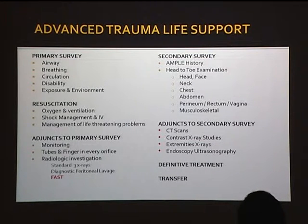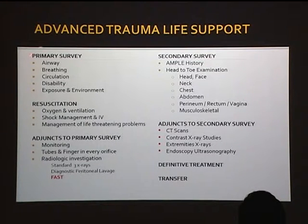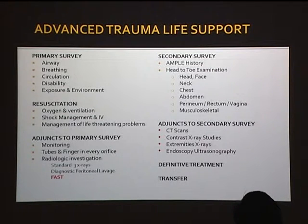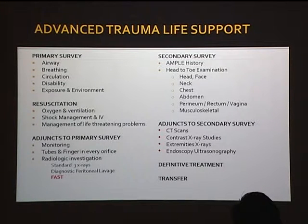You tackle the life-threatening problems first. In the primary survey, we talk about A, B, C, D, E, to make sure that the life-threatening things are taken care of. For example, if airway is bad, you intubate. If there's a tension pneumothorax, you evacuate the pneumothorax. If there's a circulatory failure, you have to do fluid resuscitation and so forth.